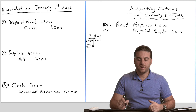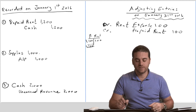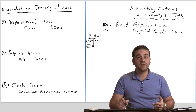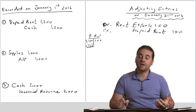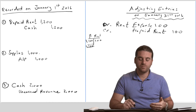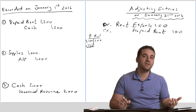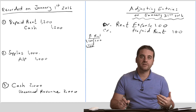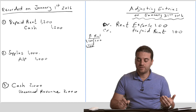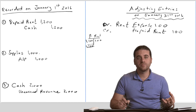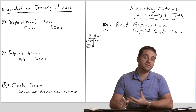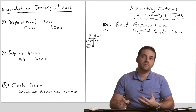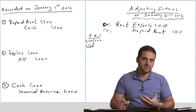Let's say our supplies on hand at the end of the month were about $700. That means we consumed $300 of supplies because we started with $1,000, still have $700 at the end, so we consumed $300 — which is $1,000 minus $700. That $300 of supplies we consumed will be transferred to an expense account. The name of that expense account is supplies expense.